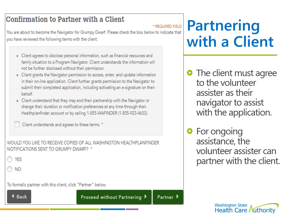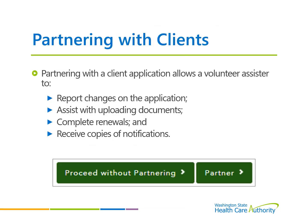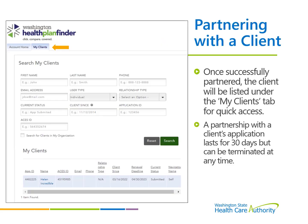The client must agree to the Volunteer Assister as their navigator to assist with the application. For ongoing assistance, the Volunteer Assister can partner with a client, but this is not required. Once the client has been located or an application has been started, the Volunteer Assister can partner with the application for 30 days. Partnering allows the Volunteer Assister to report changes, assist with uploading documents, complete renewals, and receive copies of notifications. Once partnered, the client will be listed under the My Clients tab. A Volunteer Assister can re-partner with an application every 30 days to remain the client's navigator.